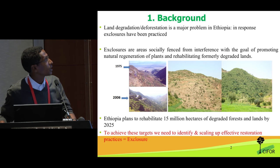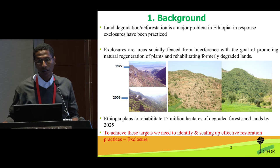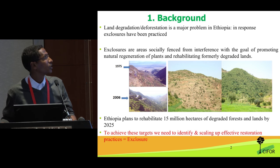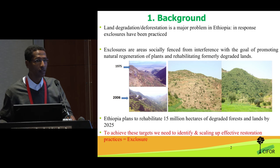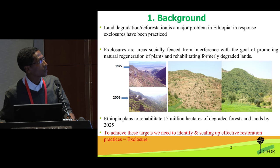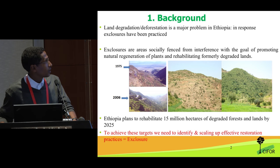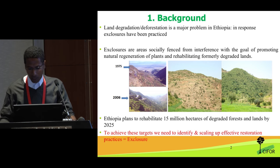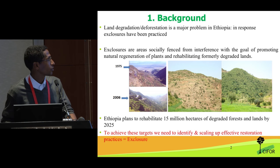We can see how it was in 1975 and now in 2006, done only by the community, contributing about 40 to 60 days per year of free labor, and similar degraded landscapes were changed into green. Ethiopia plans to rehabilitate 50 million hectares, and one of the only viable options we think could be exclosures.